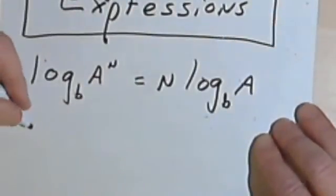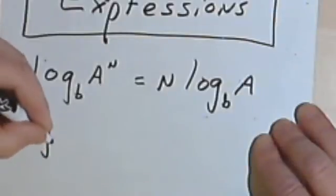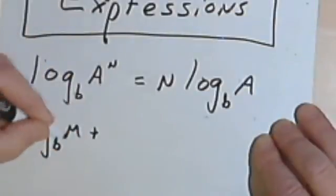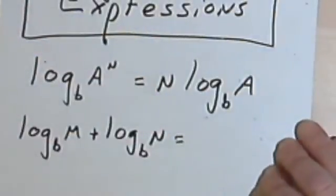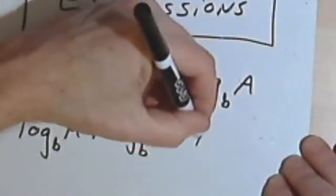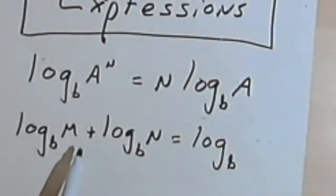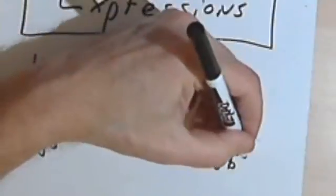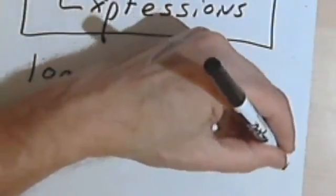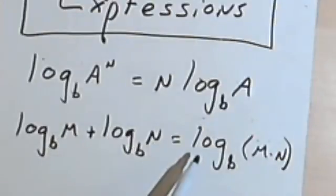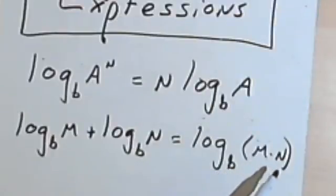Then there's something called the product property. The product property says if I've got two logarithms with the same base — say base b — like the log base b of m and the log base b of n, I can combine them into one logarithm with the same base by taking the arguments and multiplying them together. So the log base b of m plus the log base b of n equals the log base b of m times n.